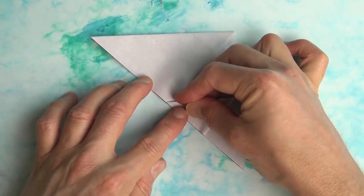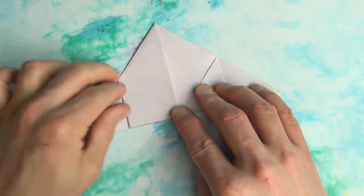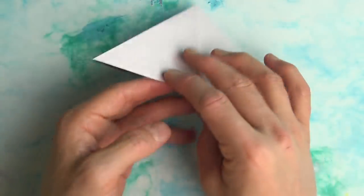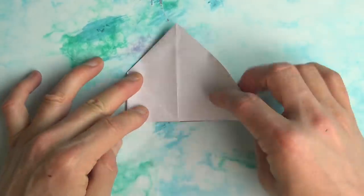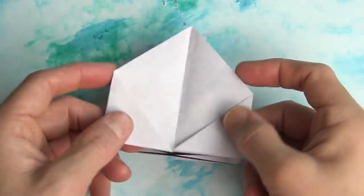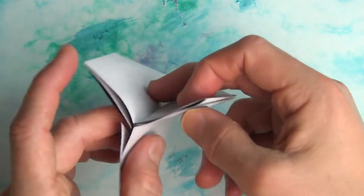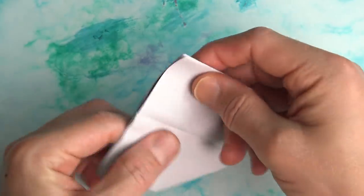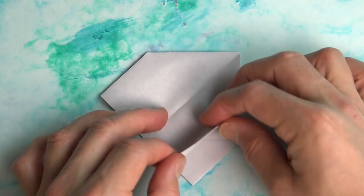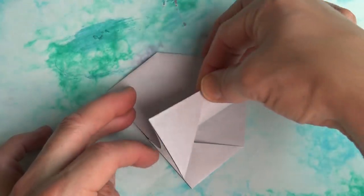Fold this corner to the center and repeat. Turn over and repeat. And we have a house. Now bring the two front flaps together and the two rear flaps together. So it's another house. Now bring this flap to this crease and let the flap inside swing out.